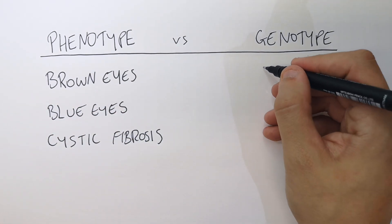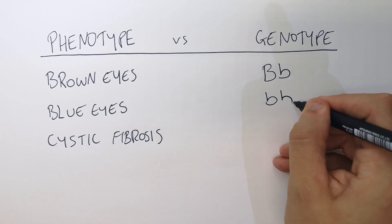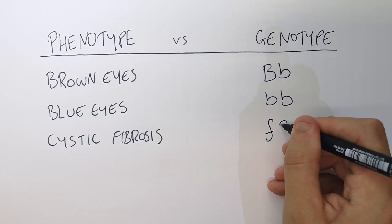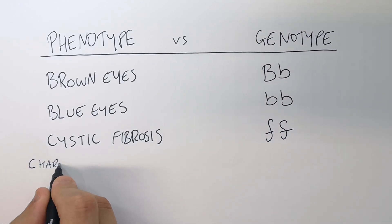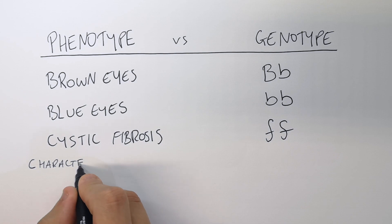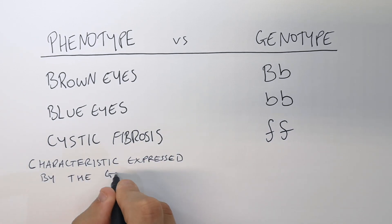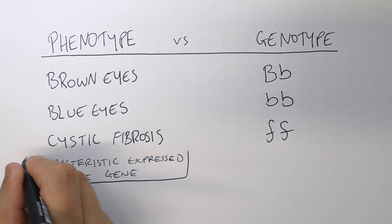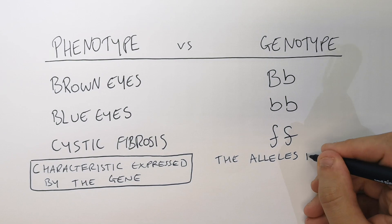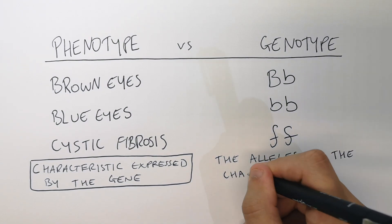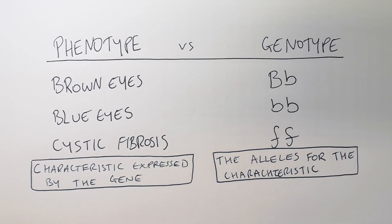Whereas the genotype is the alleles — big B little B, little B little B, little F little F. So the phenotype is the characteristic expressed by the gene, whereas the genotype are the alleles for the characteristic. That is the key difference.